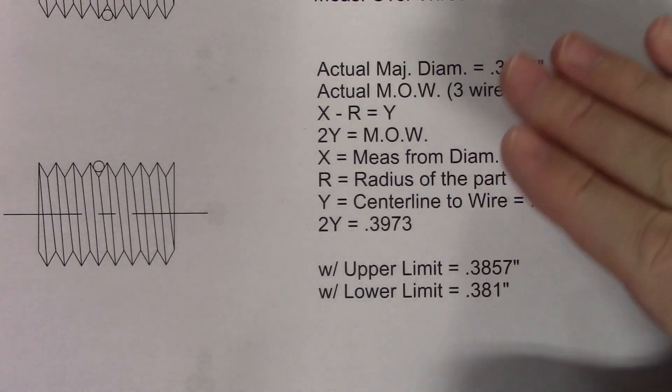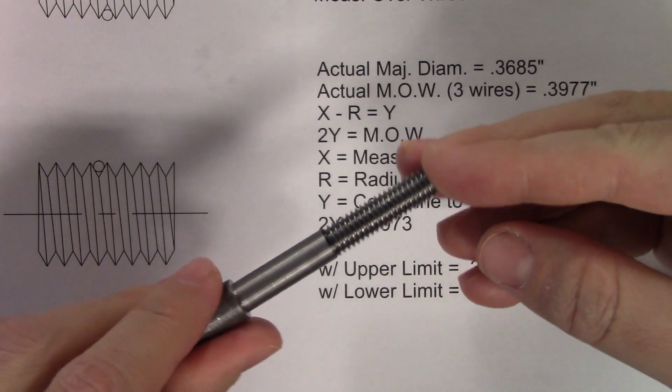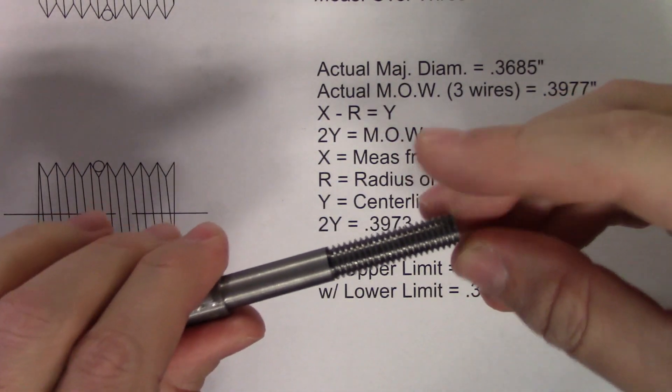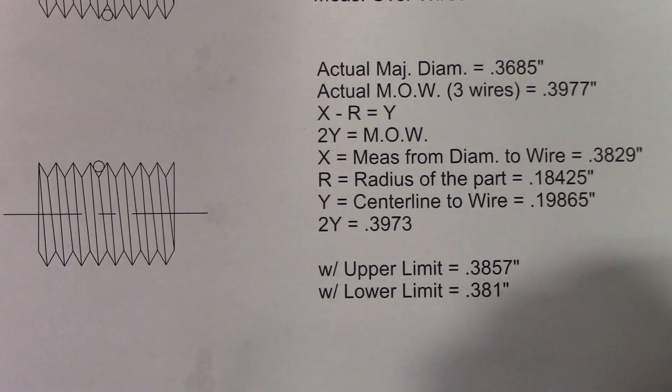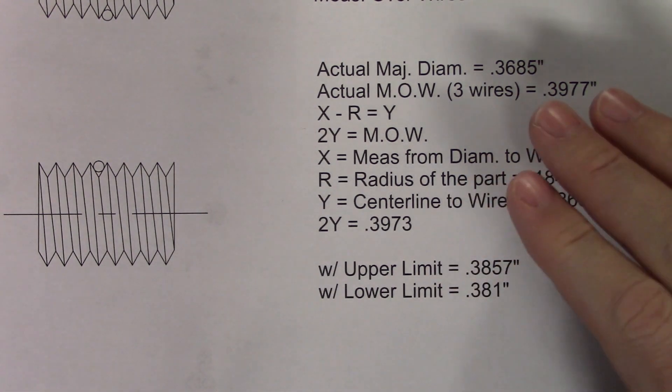These measurements are all based on the actual dimensions of this thread. But if my major diameter was instead at either the upper or lower limits, I would actually have a possible range of almost five thousandths of an inch with the single wire measurement, even with the pitch diameter remaining the same.